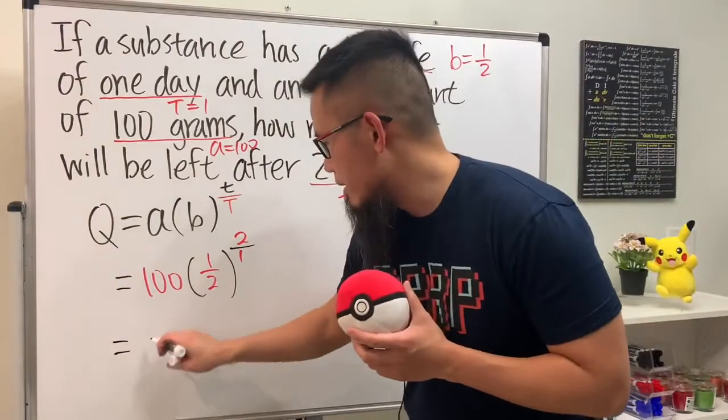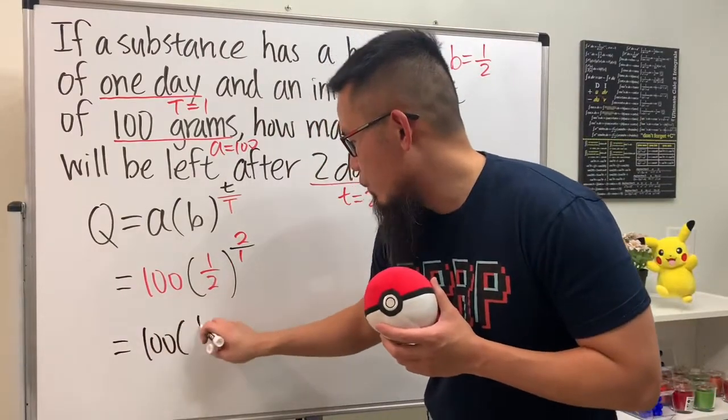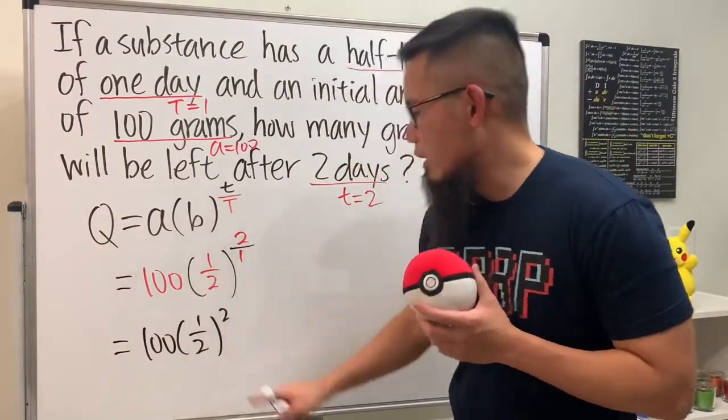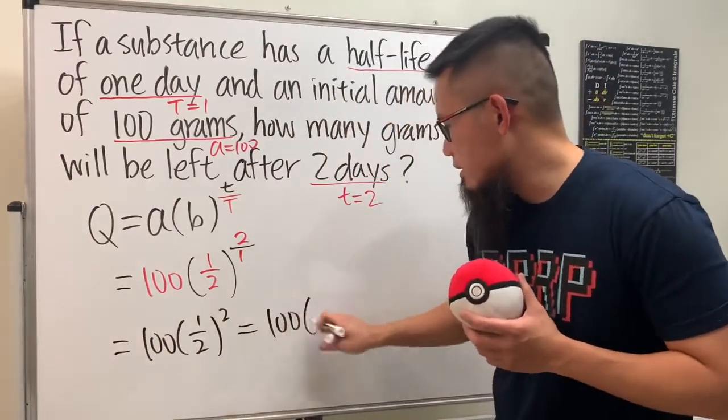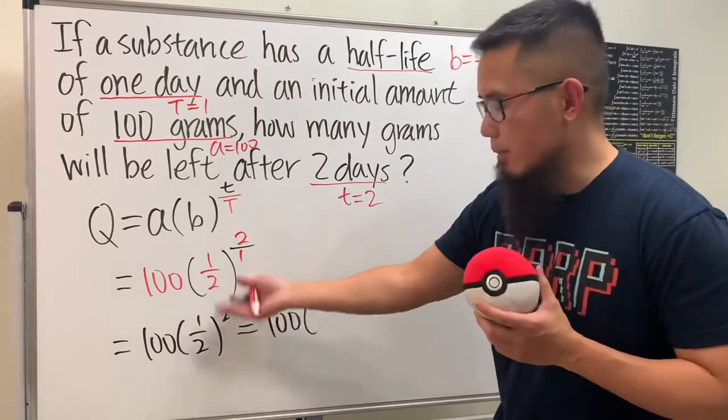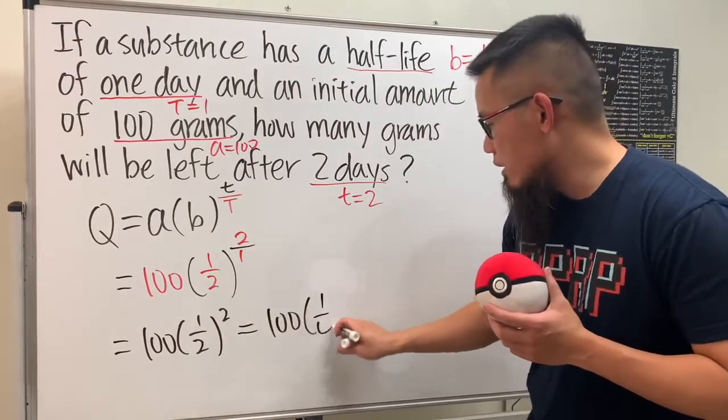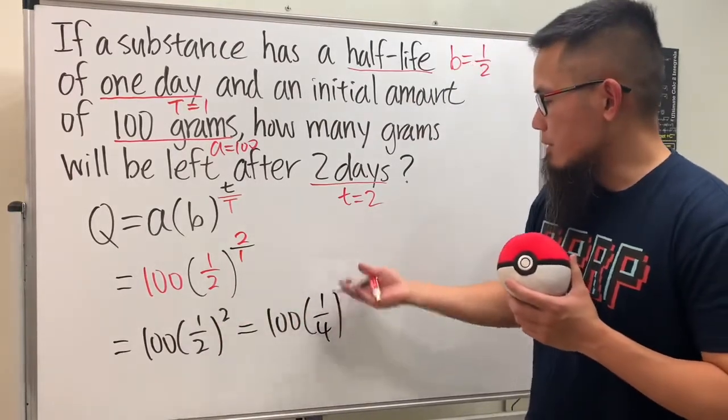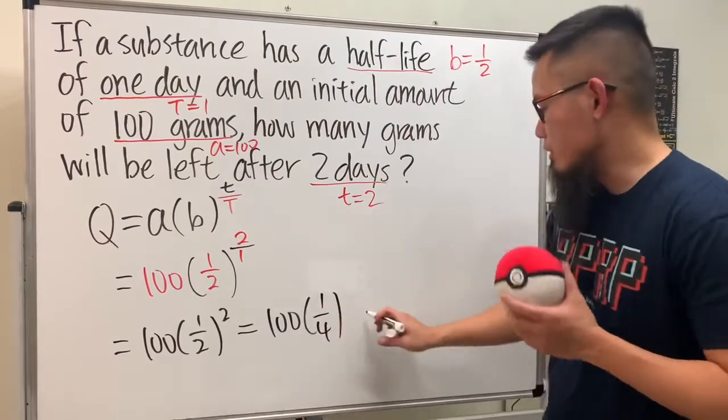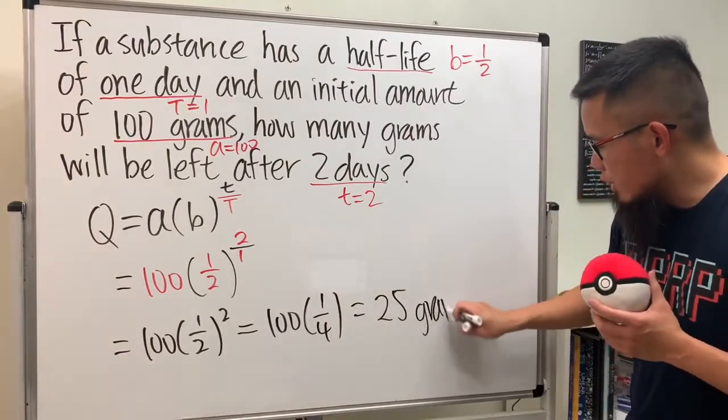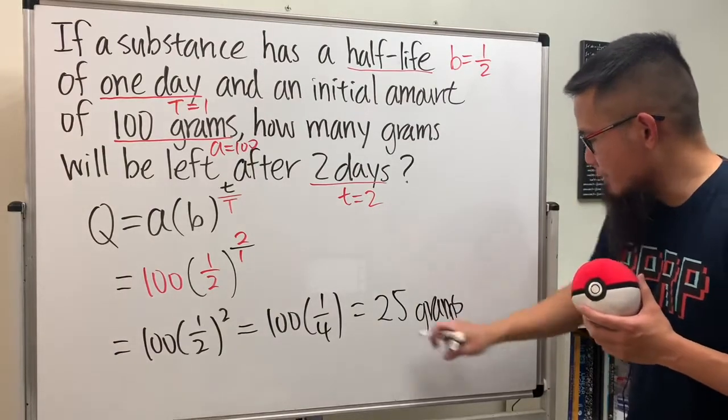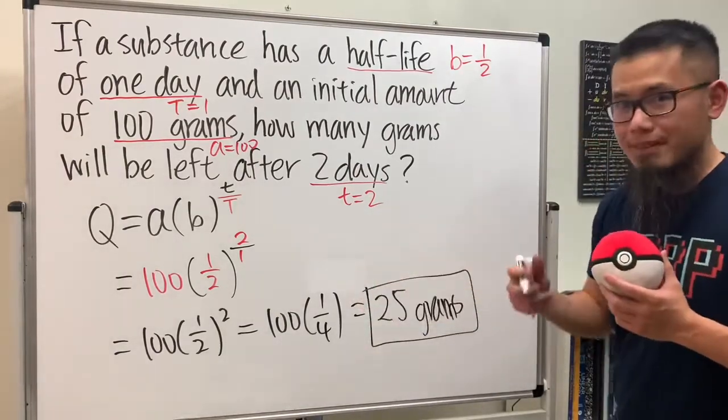This is 100 times 1/2 to the second power, which is just a quarter. 100 times 1/2 times 1/2 is 1/4, so 100 times 1/4—a quarter of 100—is just 25. The answer is 25 grams.